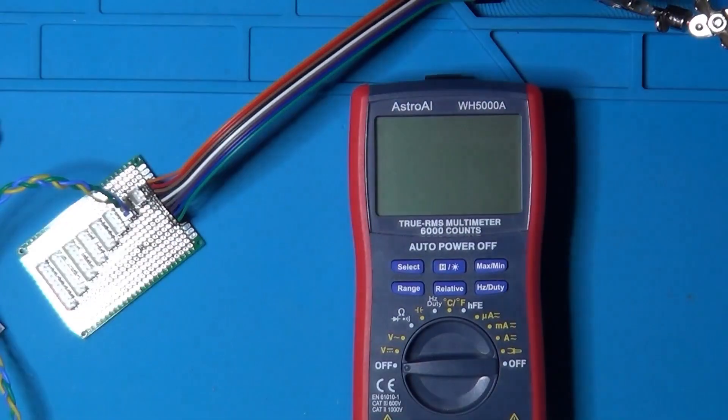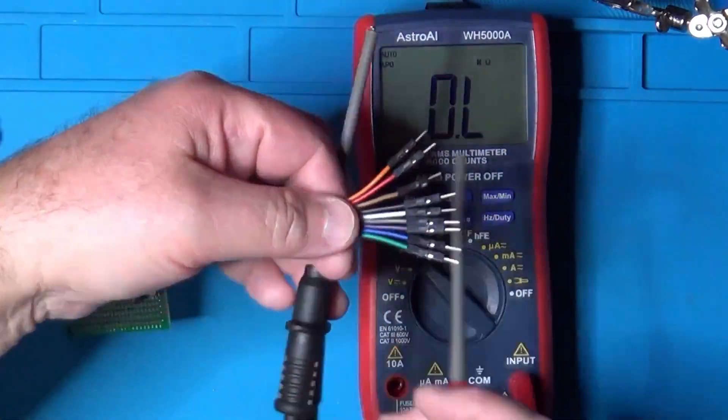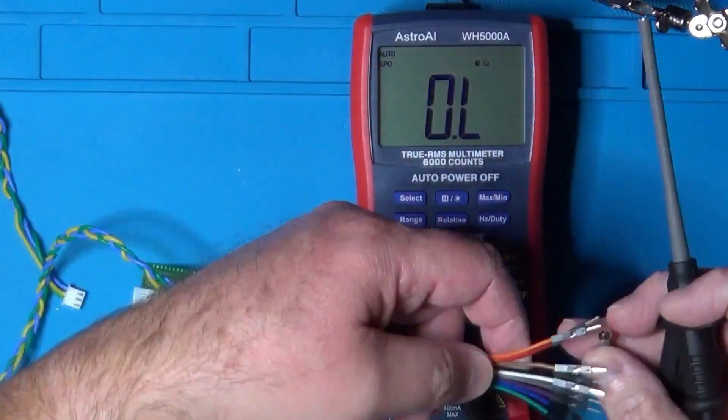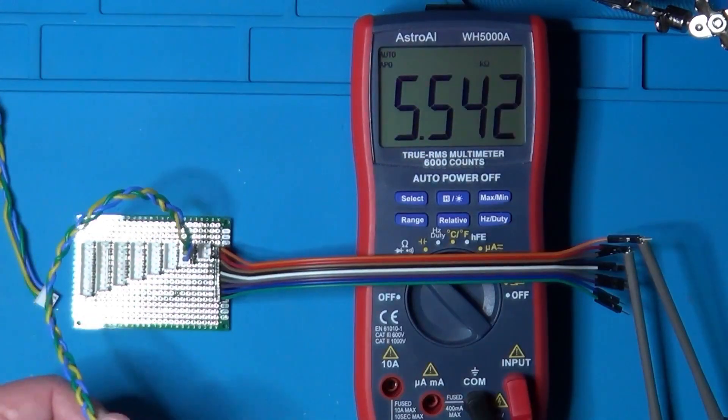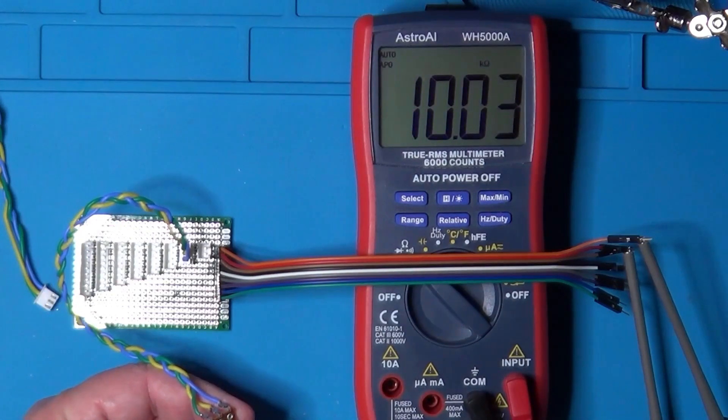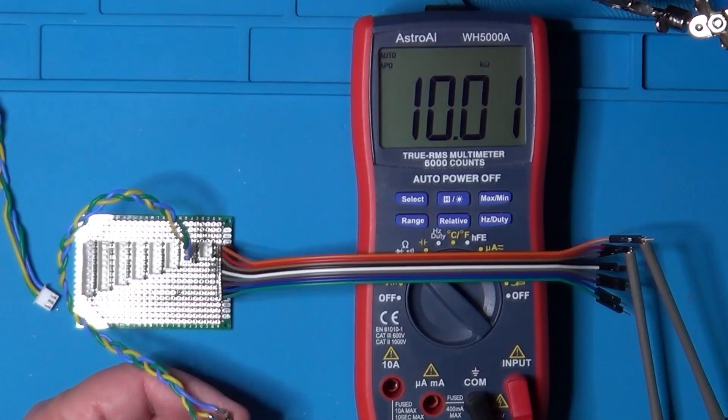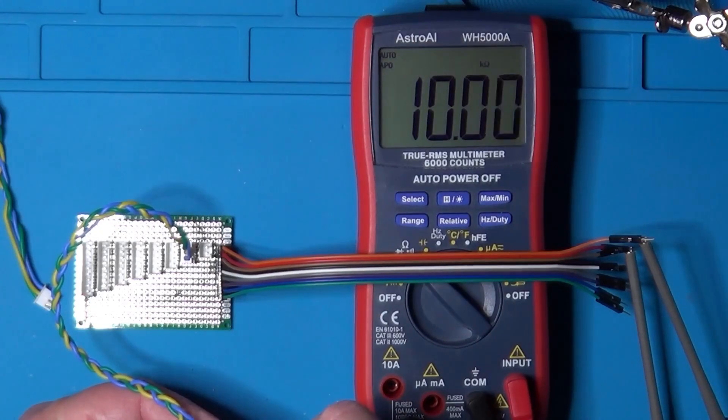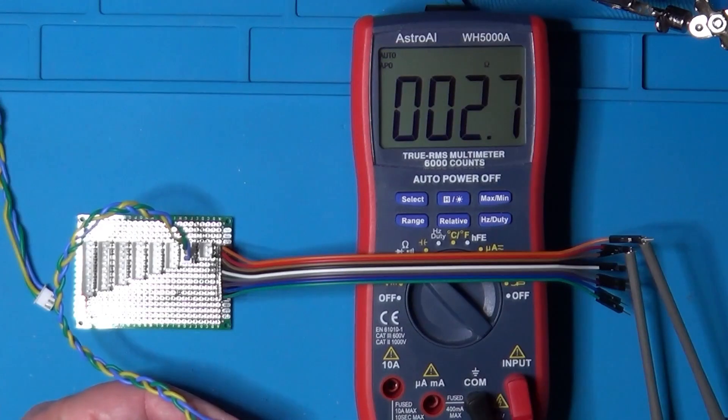Let's connect the multimeter, set it to measure ohms. Then let's connect its two probes, one on the center wire and the other one on one of the two ends of the potentiometer. Let's turn the potentiometer all the way to one side. And now the multimeter reads 10k, which is in fact the value of the potentiometer itself. Now let's turn slowly the potentiometer toward the other end, and the reading, as expected, goes down until it reaches about 0 ohms at the other end.